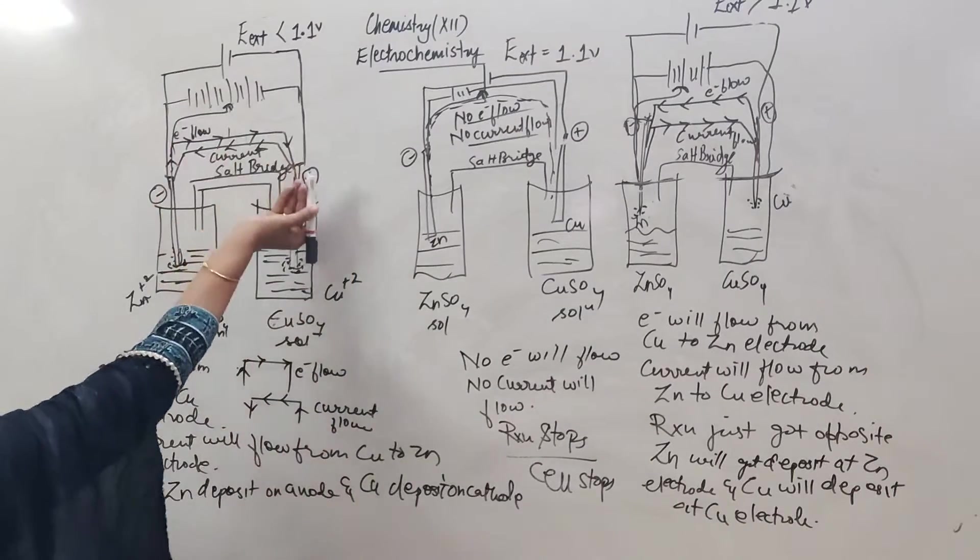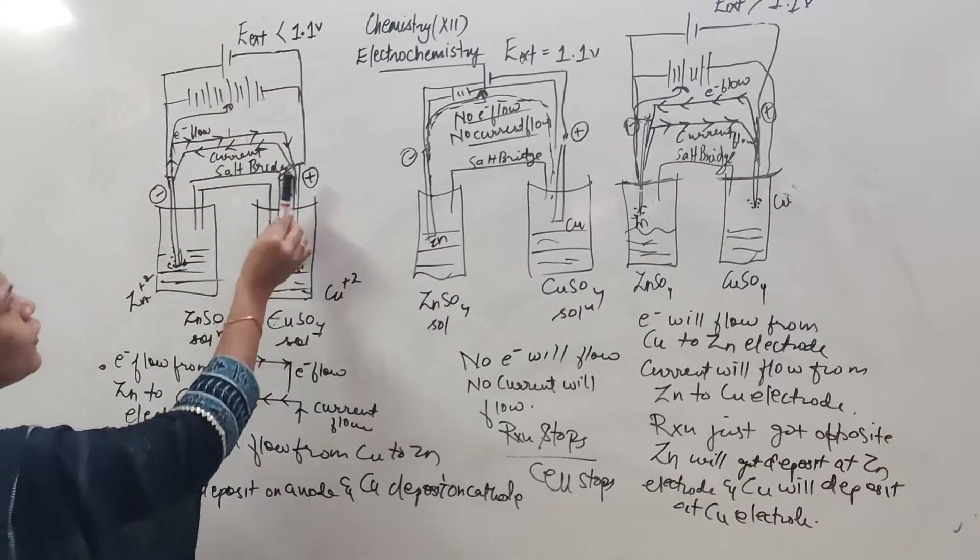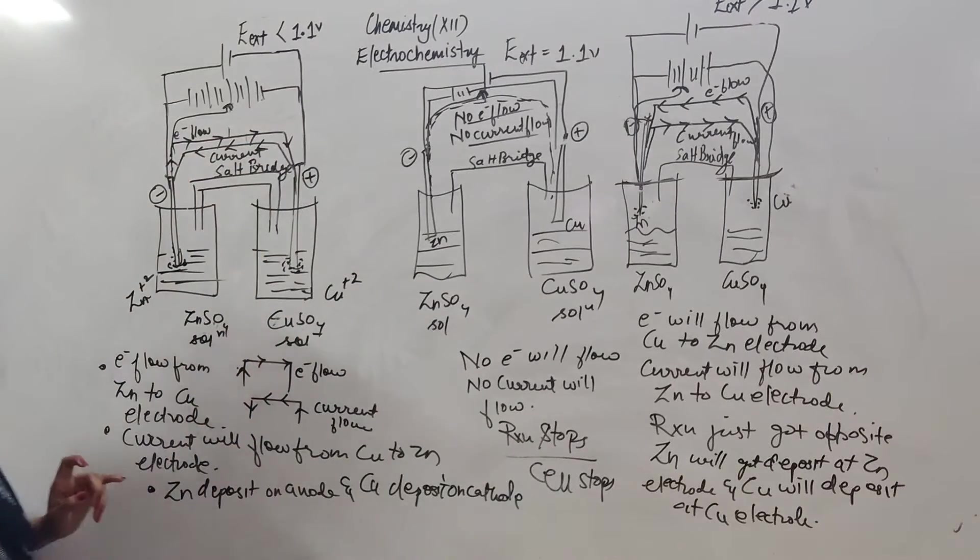Electrons will flow from here to here, and current flows in the direction from here to here.